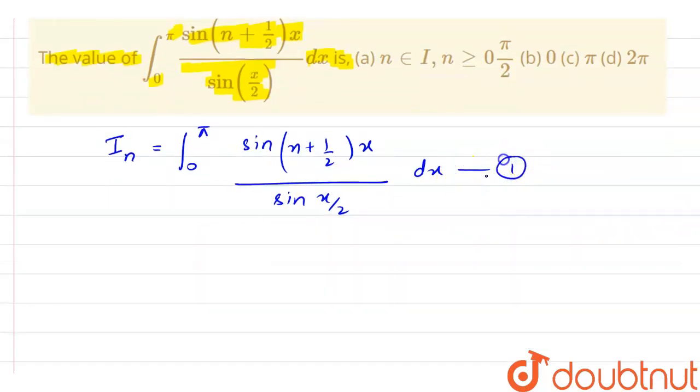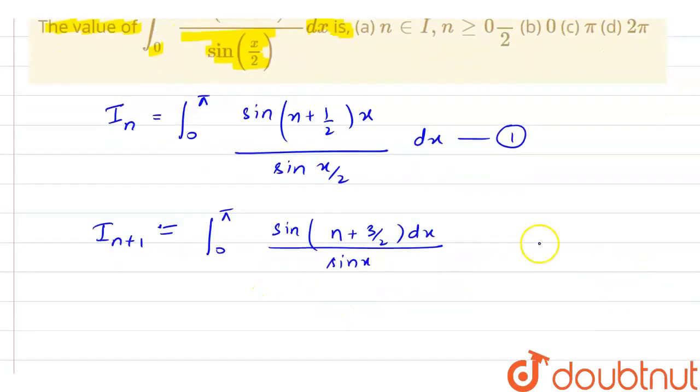If I say this is my equation 1 and what will be the value of I_{n+1}, then your answer will be 0 to pi sin. In place of n, I have to put n plus 1. So this will become n plus 3 by 2 dx divided by sin x by 2. This is equation 2 here.